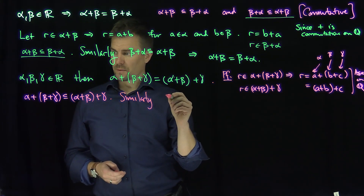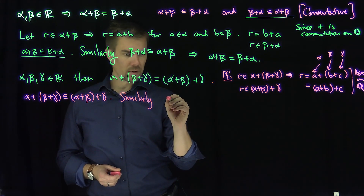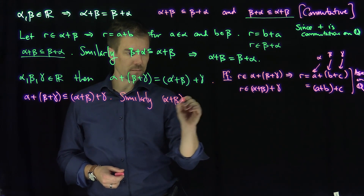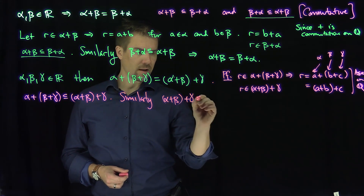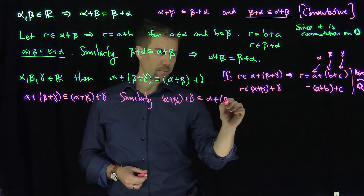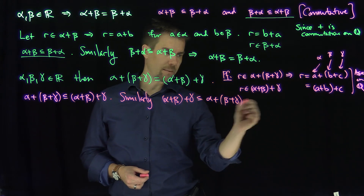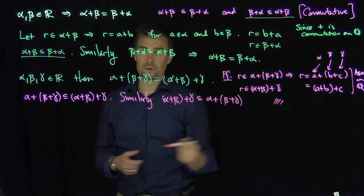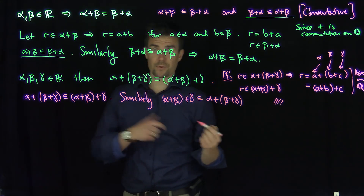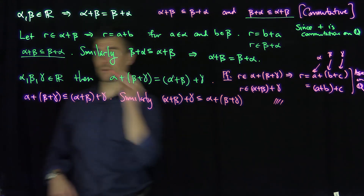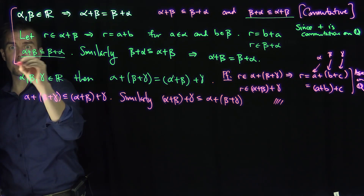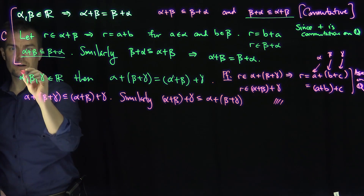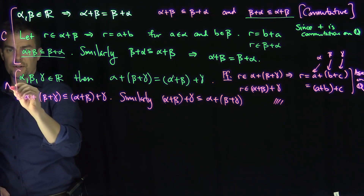Similarly, open-paren alpha plus beta close-paren plus gamma is contained in alpha plus open-paren beta plus gamma close-paren, and we have our proof that the real numbers are associative with respect to addition. So we have commutativity and associativity.